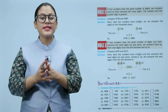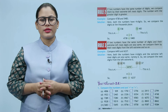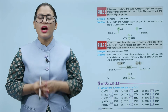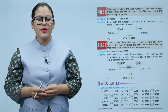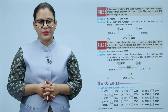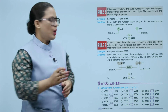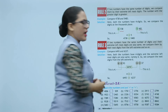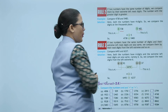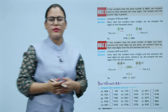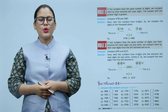Rule two: if two numbers have the same number of digits, we compare them by the extreme leftmost digits. The number with the greater digit is greater. Example: compare 4738 and 5483. Both numbers have four digits, so we compare the digits at the thousands place. Left digit of 4738 is four and left digit of 5483 is five. Five is obviously greater, so 5483 is the greater number.